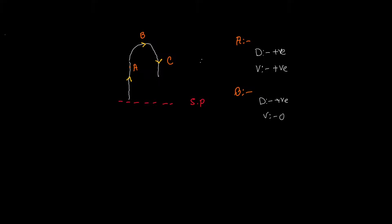Now let's look at point C. The object is moving downwards or backwards towards the starting point. At point C, the object is still above the starting point, so displacement is still positive. But for velocity the story is different — the object is now moving backward, so velocity is actually negative.